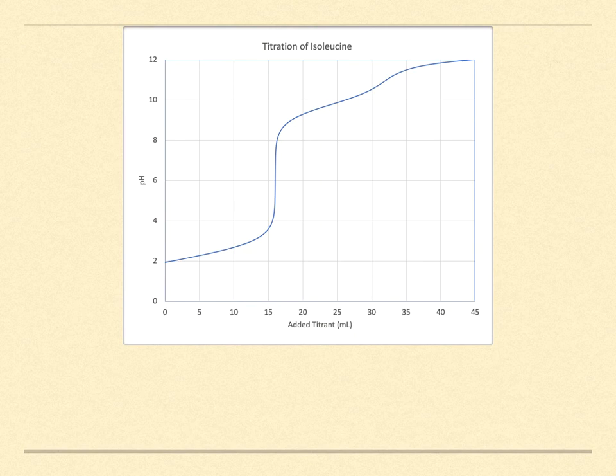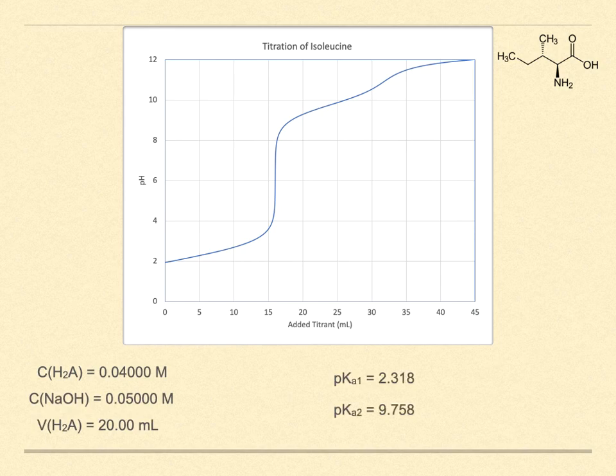Here's another example. This is the titration of the amino acid isoleucine. Again, the parameters are the same except that the two pKa values are 2.318 and 9.758. This time, the first equivalence point is observed, but the second is a very poor transition. This time, the second Ka is too small and does not distinguish itself. But if you were just trying to determine how much isoleucine was present, knowing the first equivalence point value would be sufficient. A lot of amino acids have their Ka's arranged in this way. It's common to see the first, but not the second equivalence point.